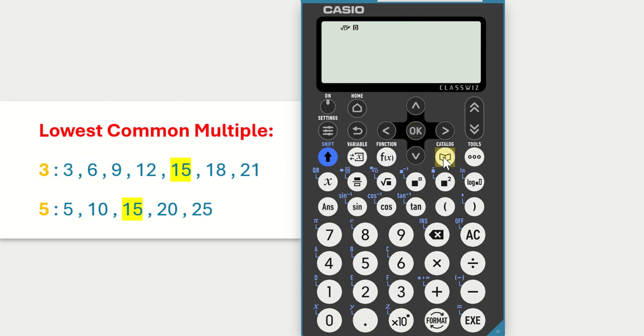You then select catalog. Scroll down to the third one, numeric calculations and click on OK.